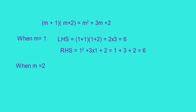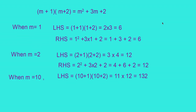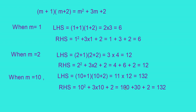When m equals 2, the LHS is 2 plus 1 into 2 plus 2, that is 3 into 4 equals 12. The RHS is 2 squared plus 3 into 2 plus 2, that is 4 plus 6 plus 2 equals 12. So the equality is true for m equals 2. When m equals 10, the LHS is 10 plus 1 into 10 plus 2, that is 11 into 12 equals 132. The RHS is 10 squared plus 3 into 10 plus 2, which is 100 plus 30 plus 2 equals 132. So this equality is true for m equals 10 as well.